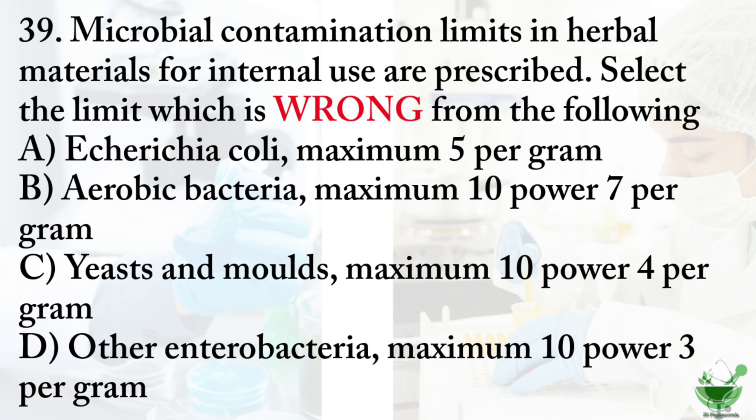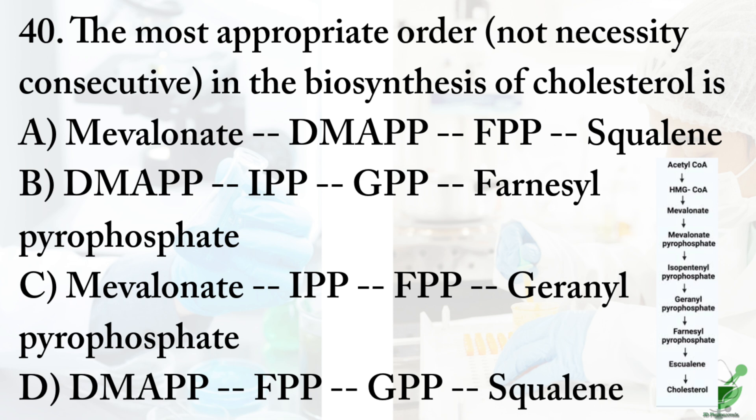Question 39: Microbial contamination limits in herbal materials for internal use — select the wrong limit. Option A: E. coli, maximum 5 per gram; option B: aerobic bacteria, maximum 10⁷ per gram; option C: yeast and molds, maximum 10⁴ per gram; option D: other Enterobacteria, maximum 10³ per gram. The correct (wrong) option is A — E. coli maximum 5 per gram is incorrect.